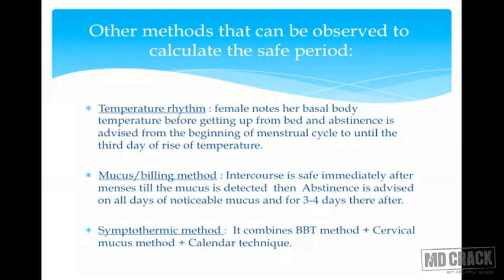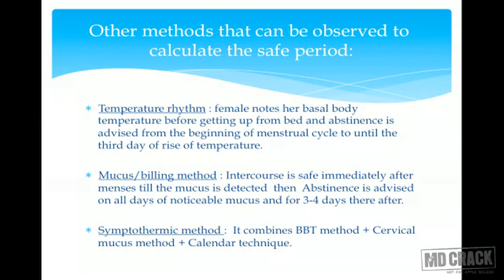In the temperature method, the woman notes her basal body temperature every morning before eating. Abstinence is advised from the beginning of the menstrual cycle until the third day of temperature rise — a long period of abstinence. In the mucus or Billing's method, pre-ovulatory mucus is thin and thread-like. The safe period is when she feels dry; abstinence is advised on all days of noticeable mucus.